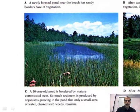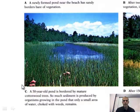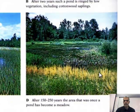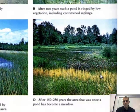Now here, after a 50-year pond, it's bordered by mature trees. You can see sediment is produced by organisms and the pond is starting to get filled in. Then, as it says, 150 to 250 years later, the area that was once a pond has now become a meadow.